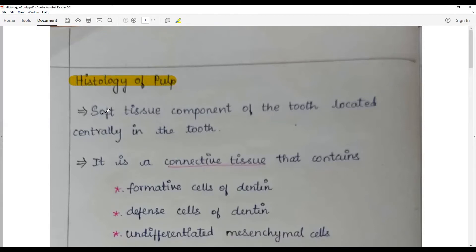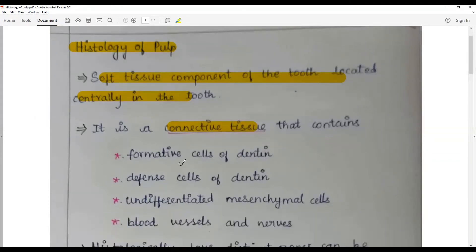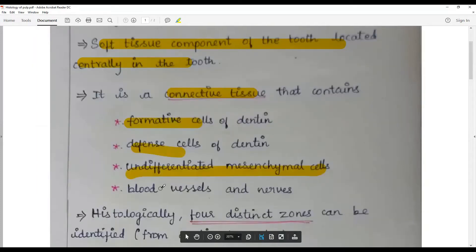The pulp is the soft tissue inside the tooth and it is located centrally. It's a connective tissue made up of ectomesenchyme and contains formative cells, defense cells, undifferentiated mesenchymal cells, blood vessels and nerves.